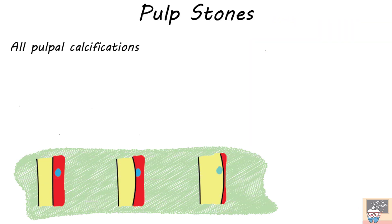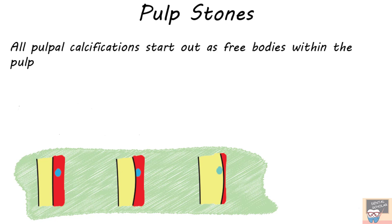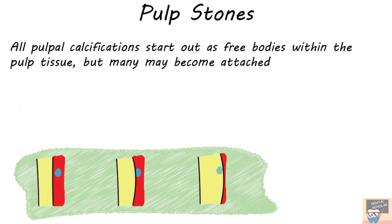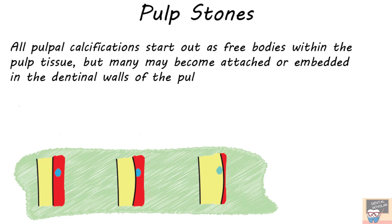All pulpal calcifications start out as free bodies within the pulpal tissue, but with time, as the dentine thickness increases due to continuous deposition of dentine, many of these stones may become attached and later become embedded in the dentinal wall of the pulp chamber. So free, attached, and embedded are different stages of the same pulp stone in its life cycle.